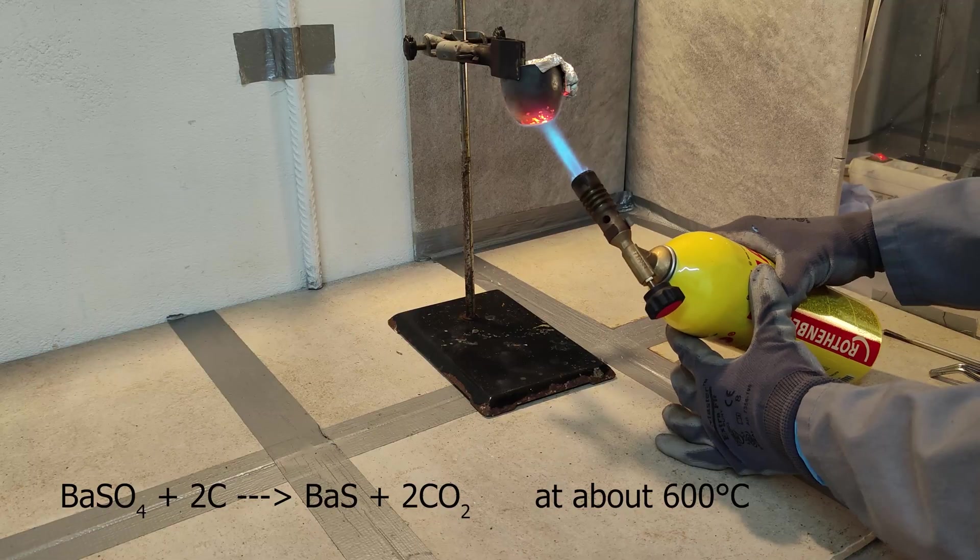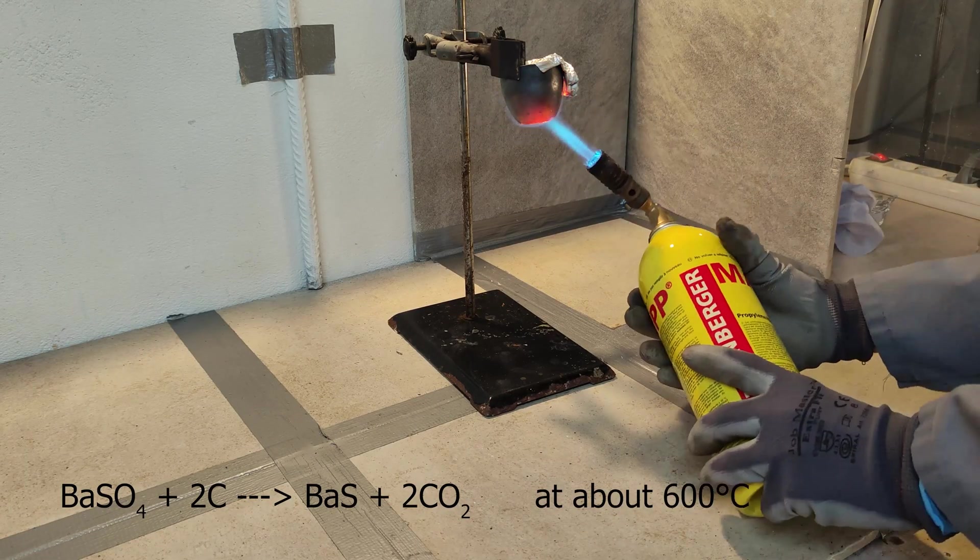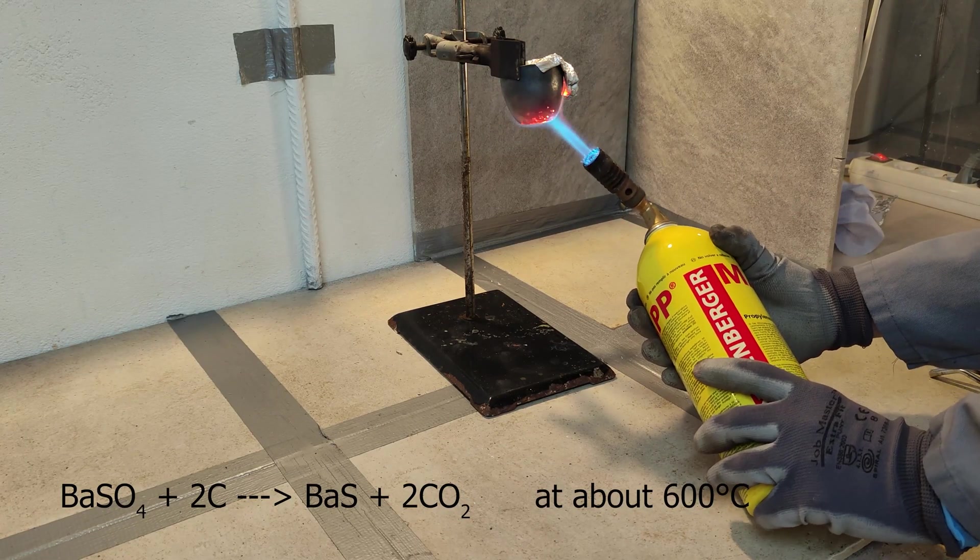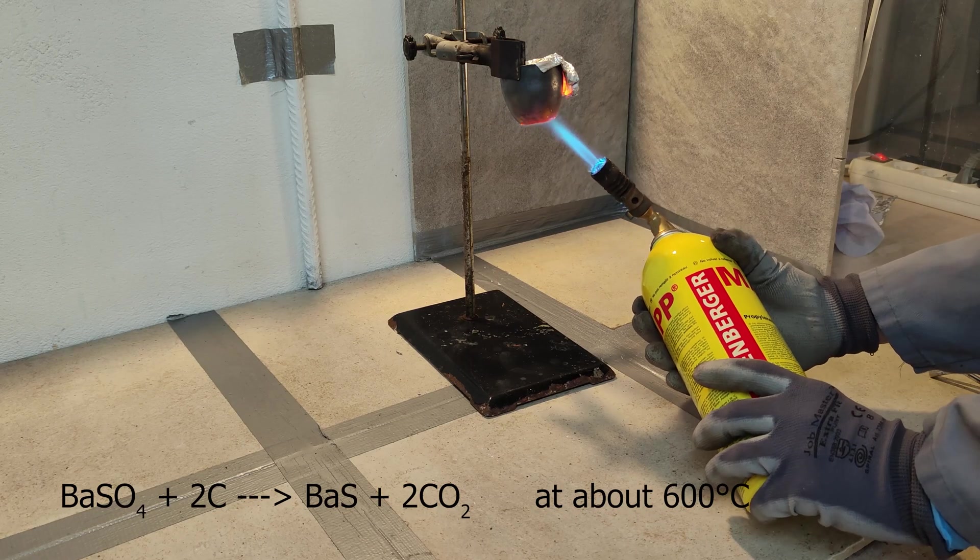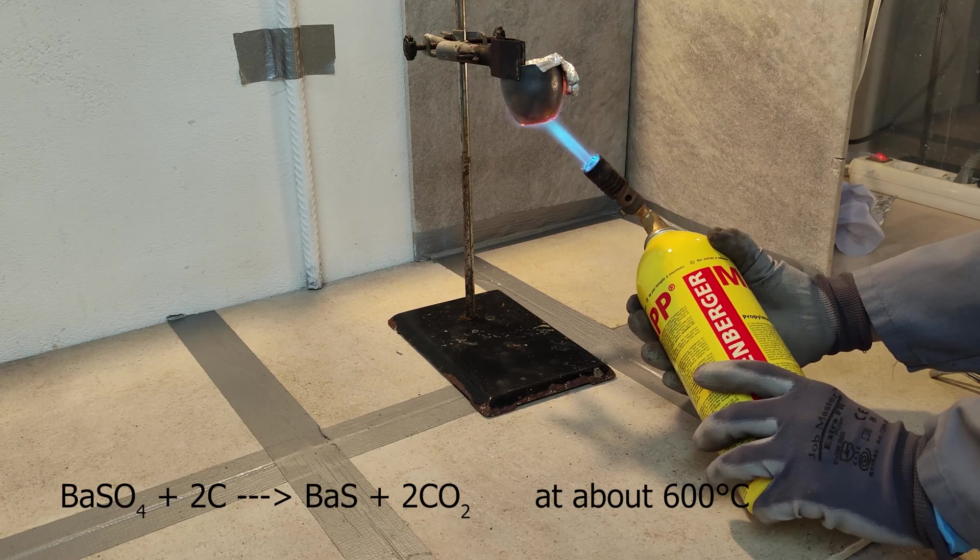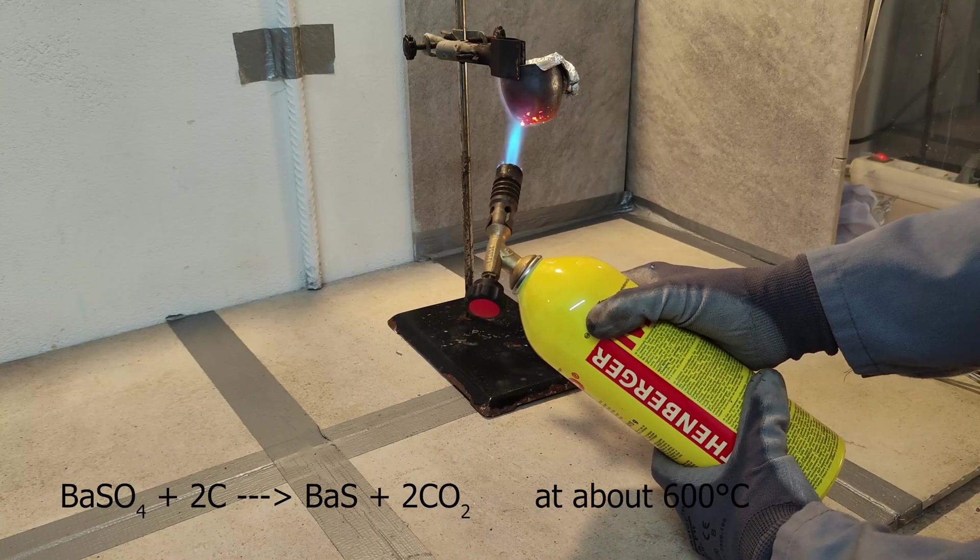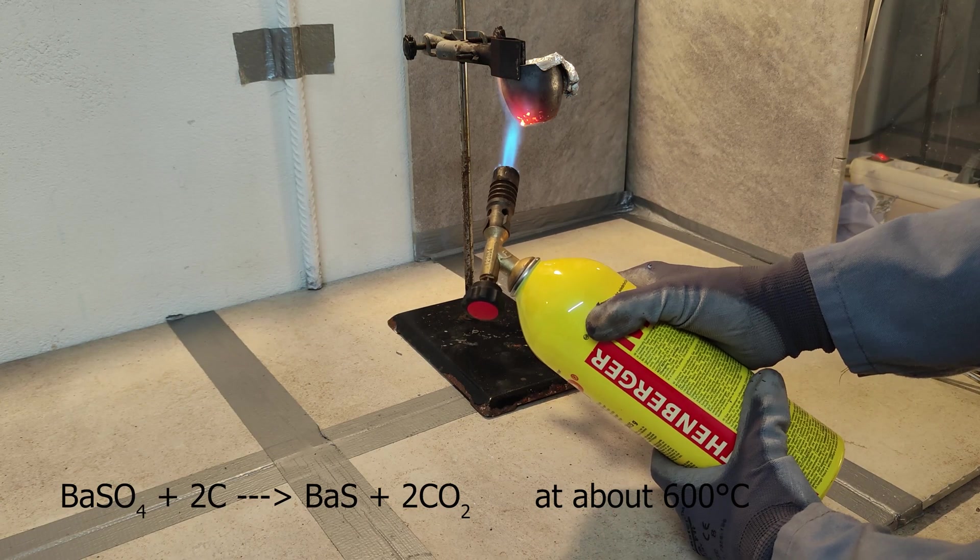The second way would be a thermochemical sulfate reduction. This is the industrial way of refining barium sulfate ore called barite. For this, the sulfate ore is heated with carbon. This is then called a carbothermal reduction.